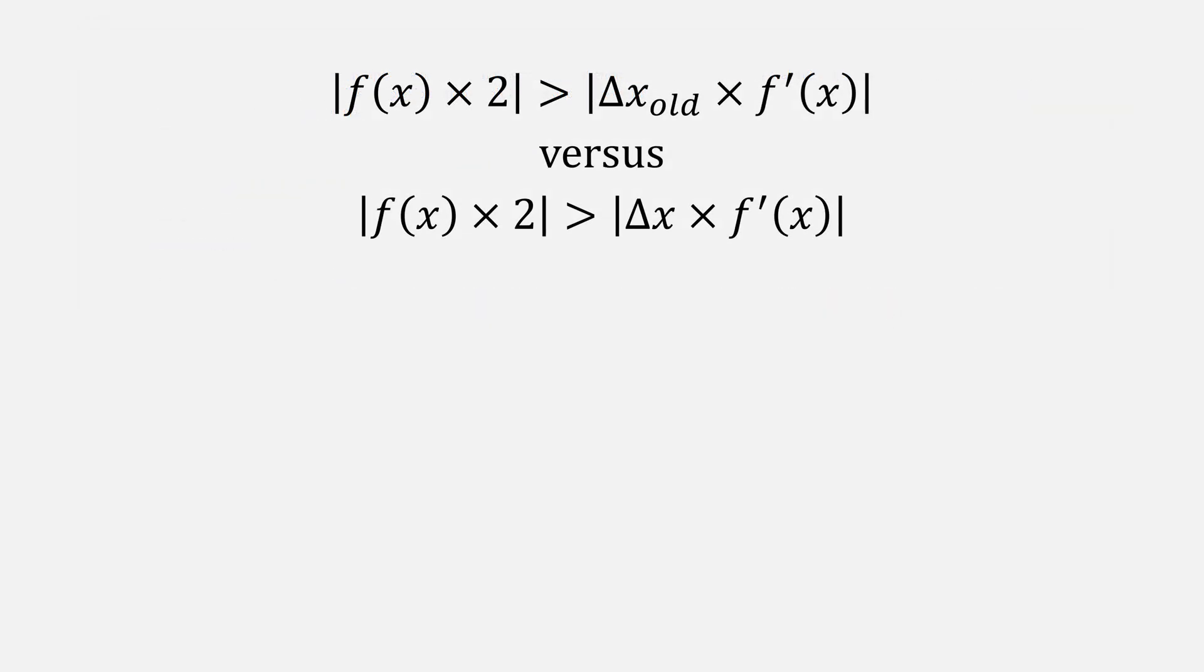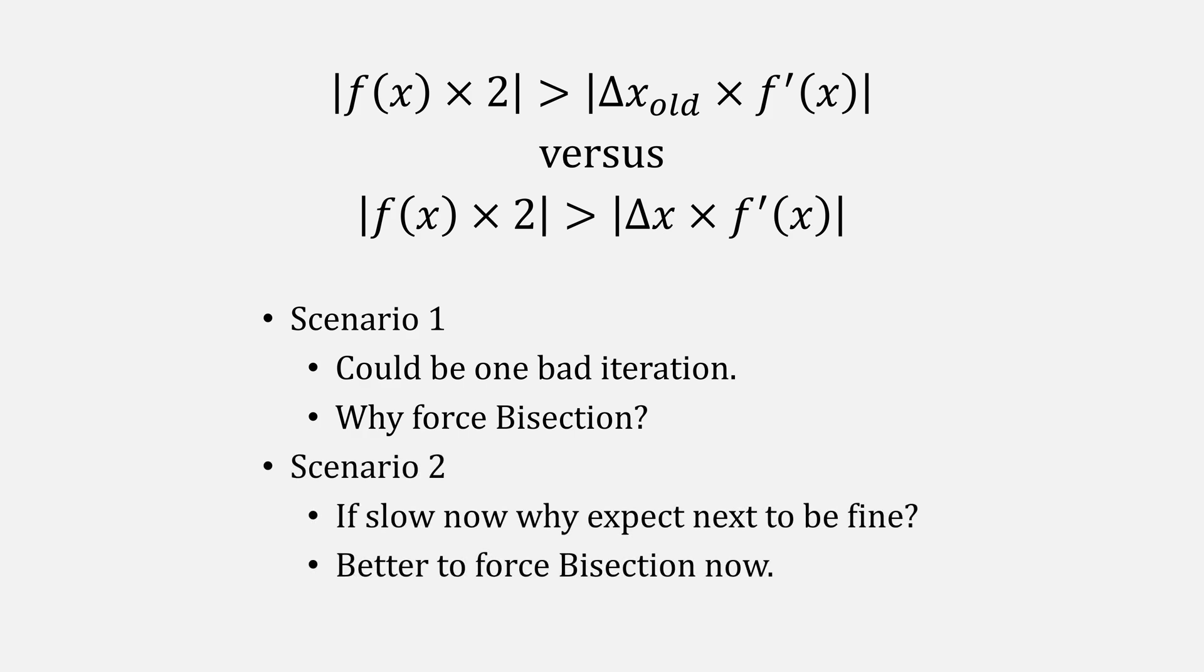Deciding whether or not to use delta x old versus delta x comes down to two scenarios. The first is if Newton's method is behaving poorly, it could just be one bad iteration. So just wait and see. Let it do another iteration and use delta x old. Scenario 2 says if it's slow right now, why expect the next iteration of Newton's method to be fine? Force a bisection to speed things up. It really is a glass half full, half empty kind of mindset. So either could be valid.